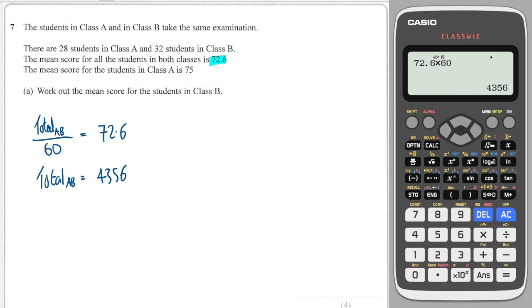Next line, the mean score of the students in Class A is 75. Well, again, I could do the same thing. I could write the total, this time just in Class A, divided by the number of people in A, which is 28, is equal to 75. So I can reverse that to work out the total number of marks scored in Class A by doing 75 times 28, and that's 2100.